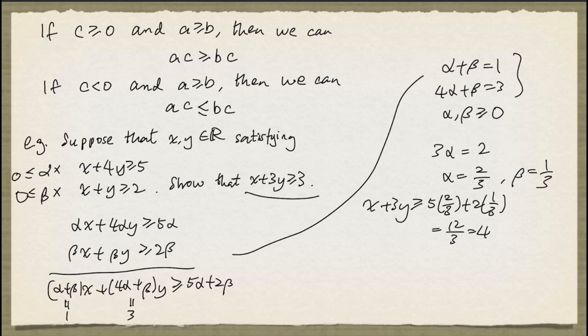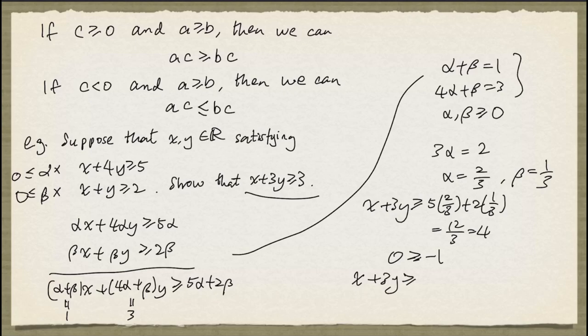Well, 4 is certainly greater than 3. But what we can do at this point is note that 0 is greater than or equal to negative 1. So if we add the inequality x plus 3y greater than or equal to 4 and the inequality 0 greater than or equal to negative 1, we obtain x plus 3y greater than or equal to 3.